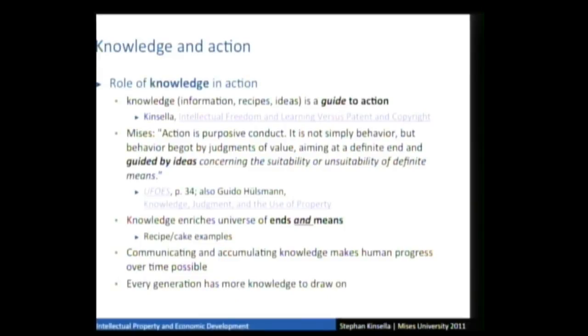Let me give a simple example. Imagine your end is to satisfy your hunger — a felt uneasiness in Mises' sense. From your past knowledge and experience, you're aware of the possibility of making a cake, that you like cakes, that you have ingredients, and you know the technique. You consider your ends: you can make a chocolate cake or a lemon cake. The human actor chooses which end to pursue, and the one not chosen is the opportunity cost of the action.